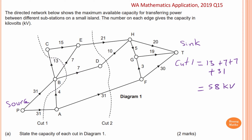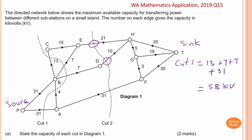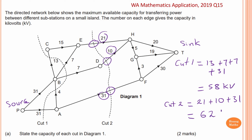For cut two, the first edge is a cut because it goes straight from the source. Two more edges are also cuts going straight from the source. Cut two equals 21 plus 10 plus 31. So 21 plus 31 is 52, plus another 10, gives 62 kilovolts.